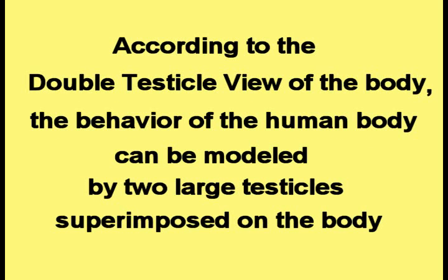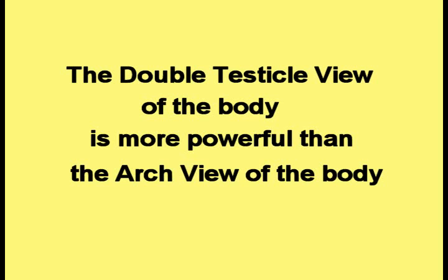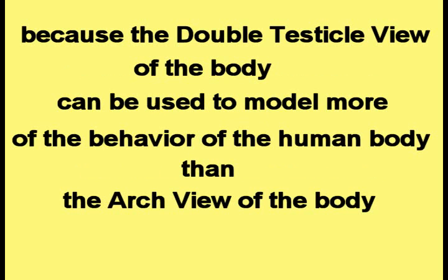According to the double testicle view of the body, the behavior of the human body can be modeled by two large testicles superimposed on the body, as shown in this picture. The double testicle view of the body is more powerful than the arch view because it can be used to model more of the behavior of the human body.